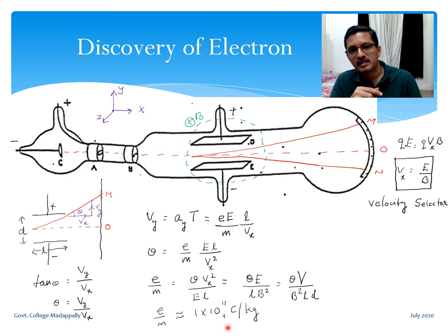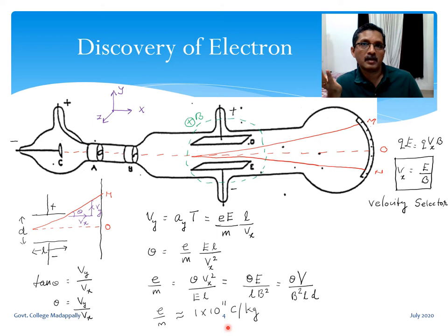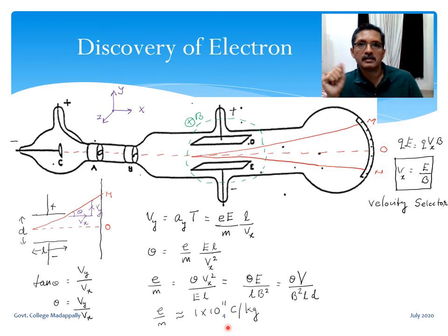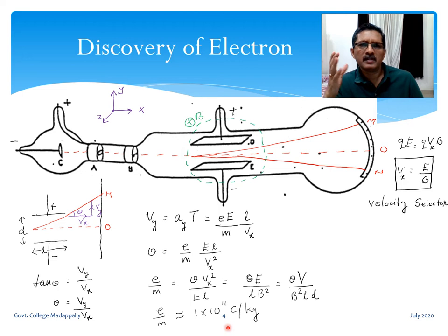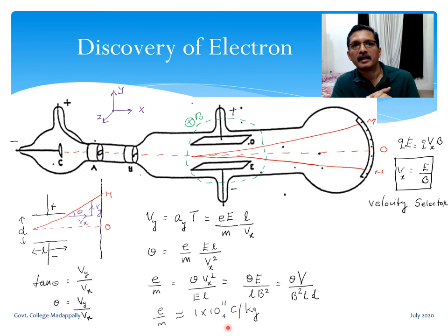Thomson performed further experiments measuring the same charge-to-mass ratio using different cathode materials, and he got the same value regardless of the cathode material. He also used different gases inside the discharge tube and again got the same value. These particles were also found to be the same as those emitted during the photoelectric effect. From these repeated experiments, Thomson concluded in his 1897 paper that these particles must be a universal constituent of matter.